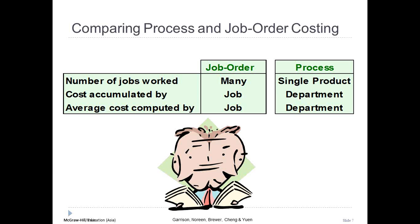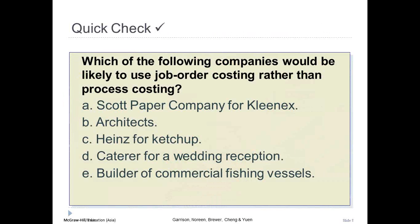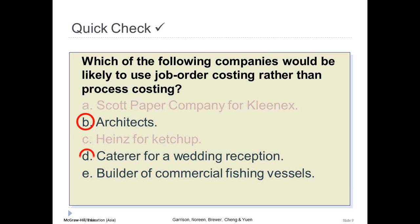Let's check our knowledge: which of the following companies would be likely to use job order costing rather than process costing? Paper and ketchup manufacturers would probably use process costing. Answers D and E are correct — those companies produce unique, custom products suited to job order costing.